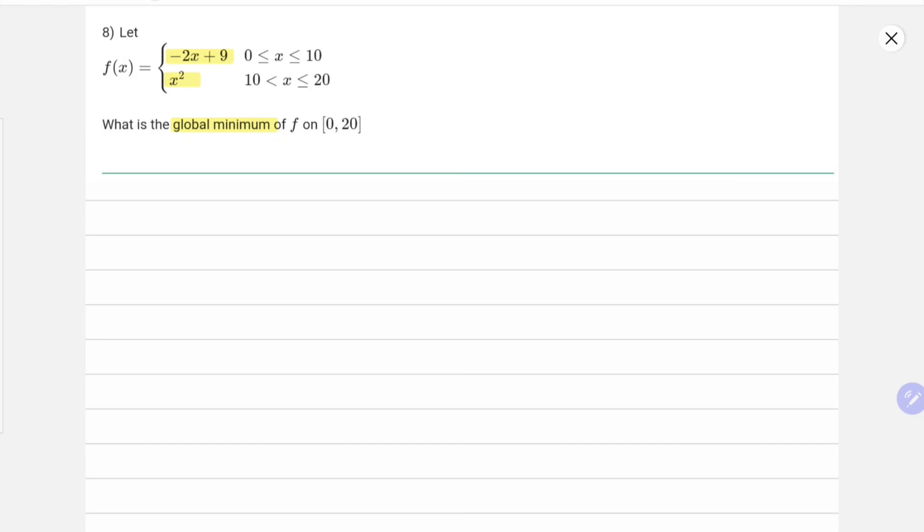To find the critical points—that is, minima and maxima—we differentiate the function. Let's find f'(x), which equals -2 for 0 to 10 and 2x for 10 to 20.